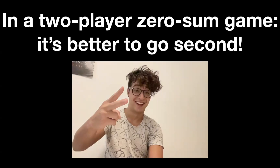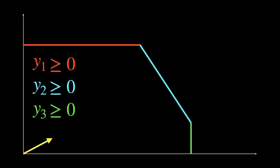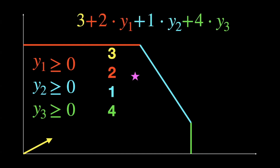Applying this back to our linear program: when the multiplier player goes second, responding optimally to the star player, we get the game equivalent to the original linear program. But what if we make the multiplier player go first? The multiplier player chooses y1 through y3, and then the star player responds to the observed y values to compute the value v.